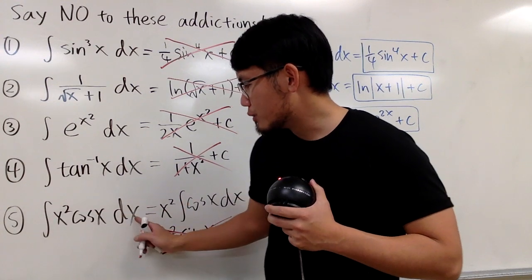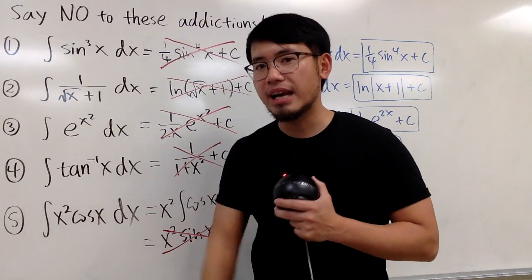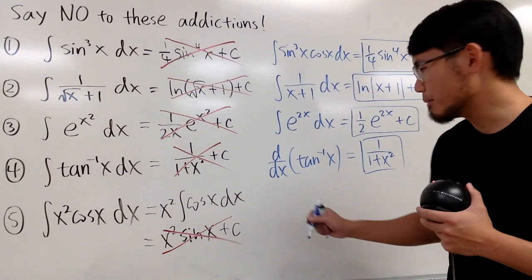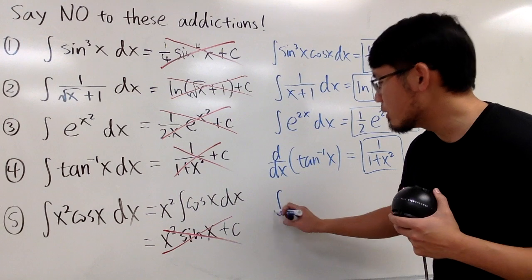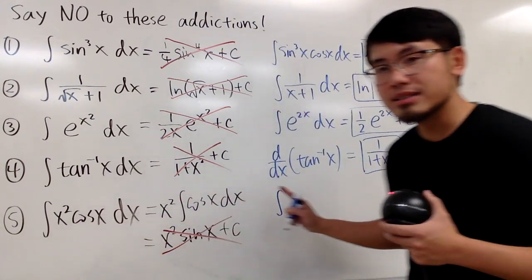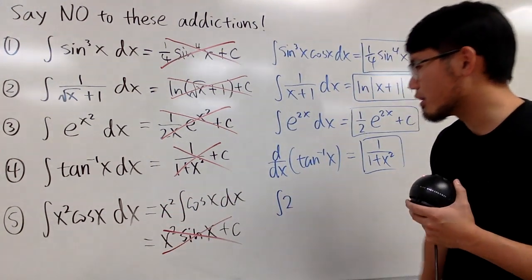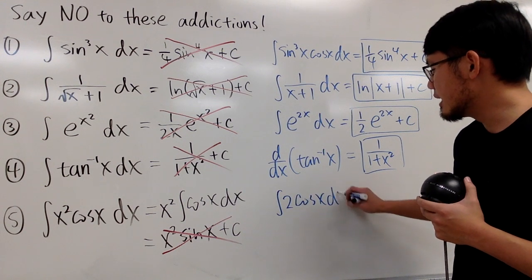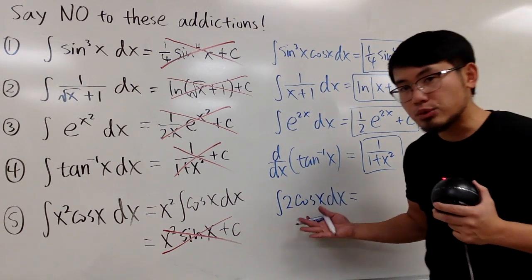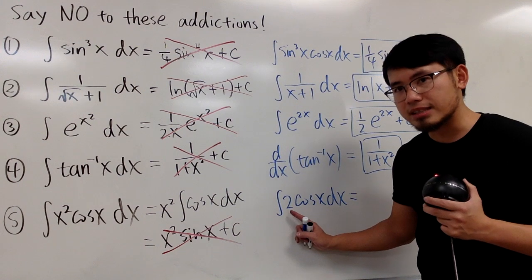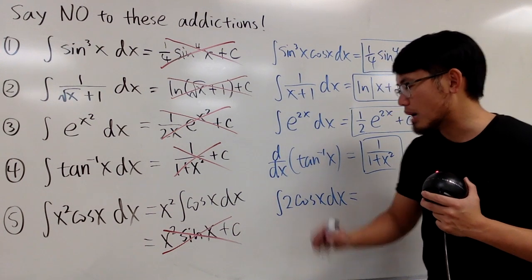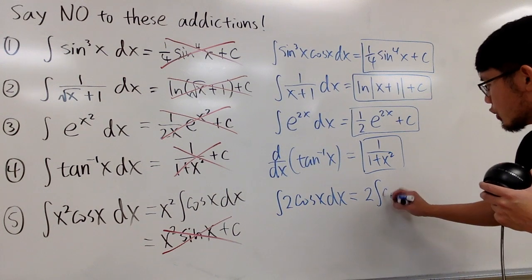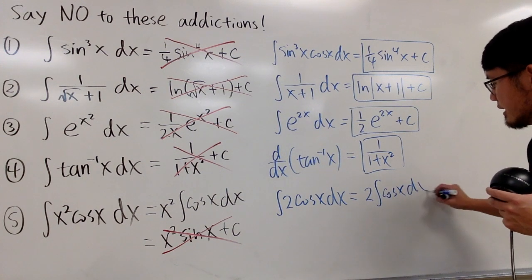The rule people have in mind is when we have an integral with a constant multiple — let's say we have a 2 times cos x dx. Notice 2 is just a constant multiple, so you can bring the number out. You can bring the 2 out and then focus on the integral of cos x dx.